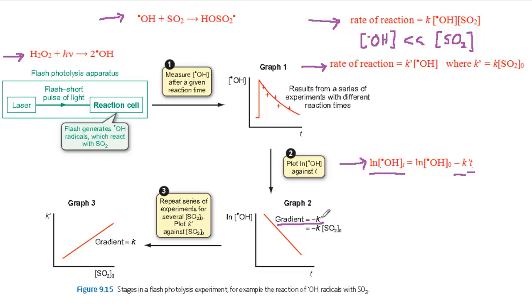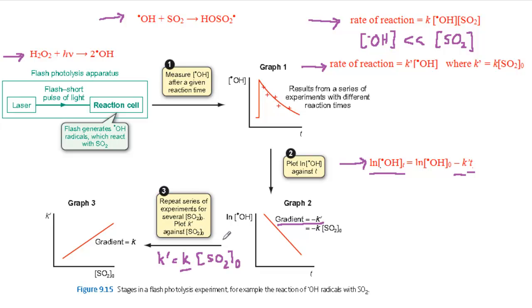We now have a value of k′ for a single value of the initial concentration of SO₂. In stage 3, the whole process in stages 1 and 2 is repeated several times for different initial values of the concentration of SO₂. Remember, k′ equals k times the initial concentration of SO₂. So a graph of k′ against the initial concentration of SO₂ in Graph 3 is a straight line with gradient k, the second-order rate constant for the reaction.